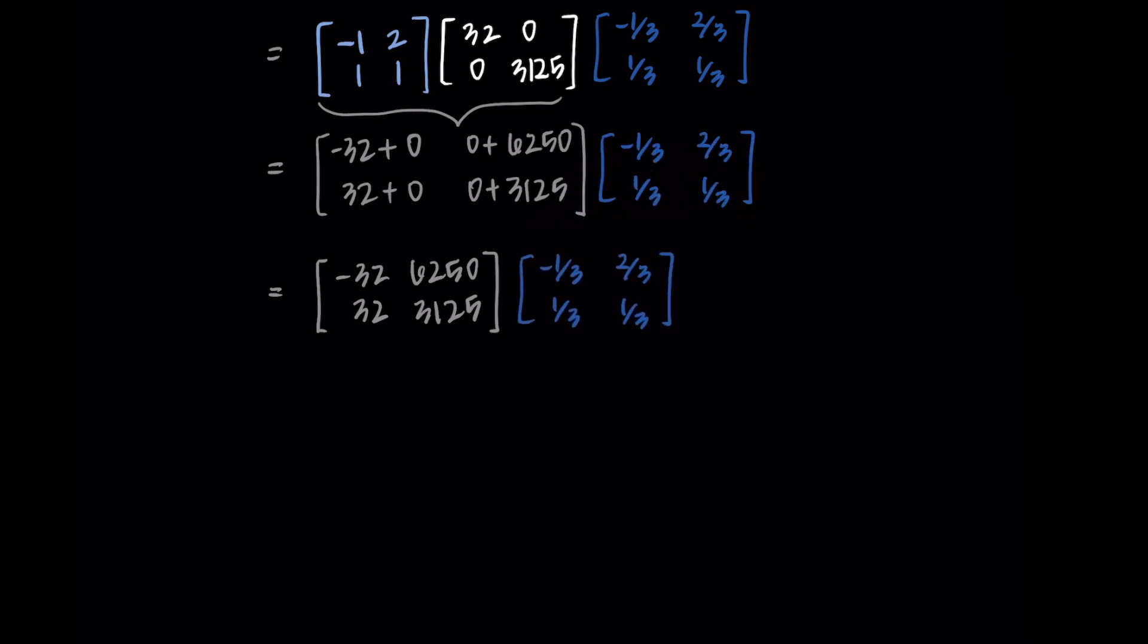Doing the rest of the multiplication, I'm doing 32 over 3 plus 6,250 over 3, then in the first row I have negative 64 over 3 plus 6,250 over 3. Then in the second row, I have negative 32 over 3 plus 3,125 over 3, and then I have 64 over 3 plus 3,125 over 3.